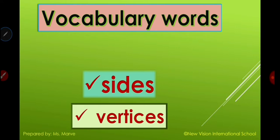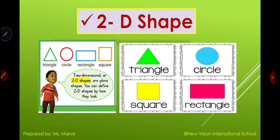In order for us to know and understand about 2D shapes, we need to understand the sides and also the vertices. Here we can see examples of 2D shapes: we have a circle, we also have a square, and we also have a rectangle. Now listen carefully — two-dimensional or 2D shapes are plane shapes. When you say plane, it means flat. You can define 2D shapes by how they look.